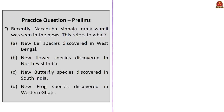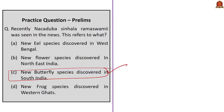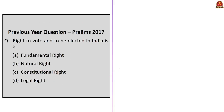The next question asks: Nakaduba Sinhala Ramaswamy, recently seen in the news, refers to what? Options include a new eel species discovered in West Bengal, a new flower species discovered in Northeast India, a new butterfly species discovered in South India, or a new frog species discovered in the Western Ghats. The correct answer is Option C — a new butterfly species discovered in South India.